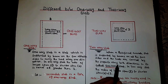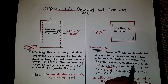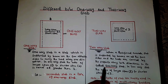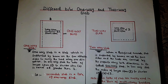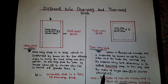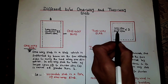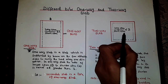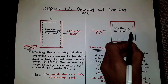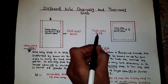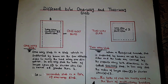In a two-way slab, the ratio of the longer span L to the shorter span B is less than two. So if longer span divided by shorter span gives an answer less than two, it will be a two-way slab.